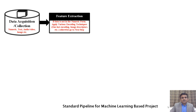After data acquisition, the next step is feature extraction. If data is not in numeric form, we have to apply various encoding techniques like one-hot encoding or image descriptors in the case of image data. If data is already in numeric form, we can skip this step.